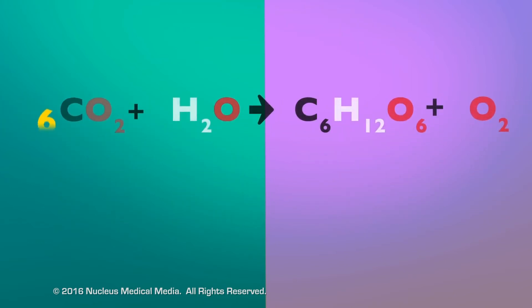Here's the balanced version of this equation. It shows six molecules of carbon dioxide reacting with six molecules of water to produce one molecule of glucose and six molecules of oxygen.